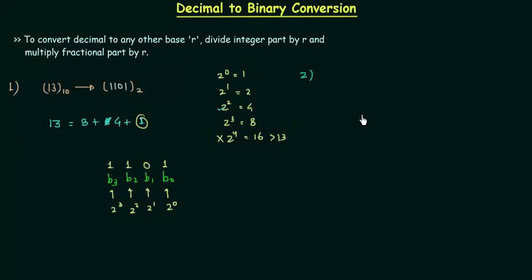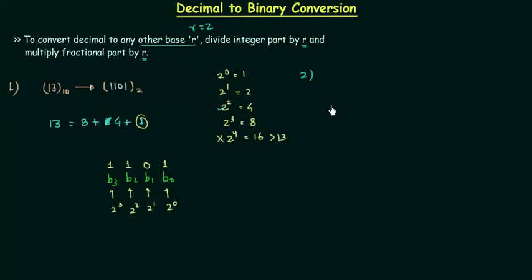In this method we have to divide the number by 2. To convert a decimal number to any other base r — in this case r equals 2 — we divide the integer part by r and multiply the fractional part by r. First we will see an example with no fractional part, then in the next example we will solve a problem that has a fractional part. For the first example of method 2, the number is 13.